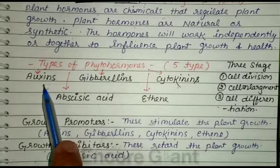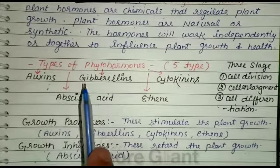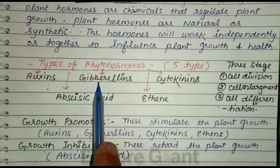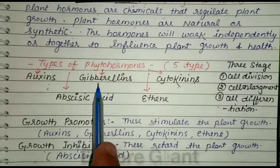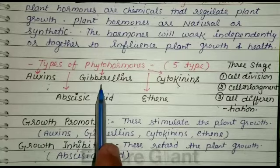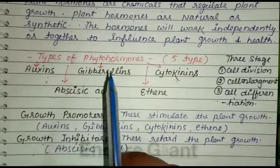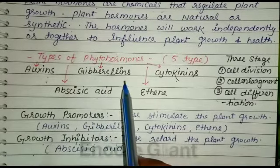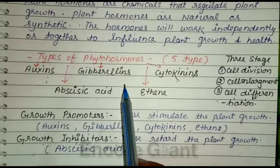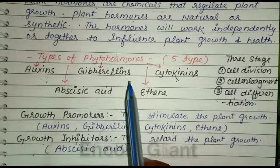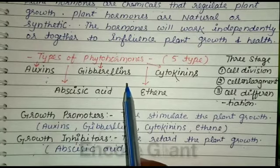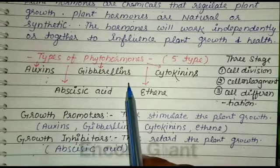The second hormone is gibberellin. Gibberellins are plant hormones which promote cell enlargement and cell differentiation. In the presence of auxin, gibberellins help in breaking the dormancy in seeds and buds. They also promote growth in fruits. Gibberellin hormones are involved mainly in shoot extension and stimulate elongation of shoots of various plant parts.